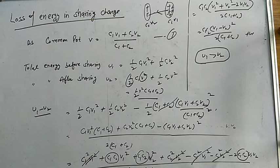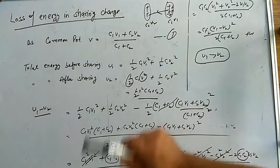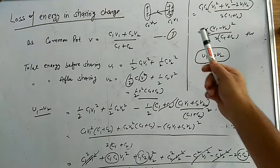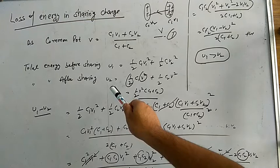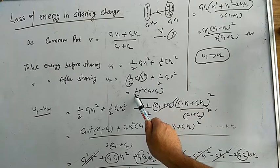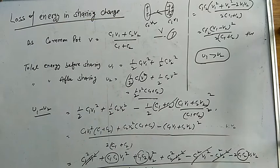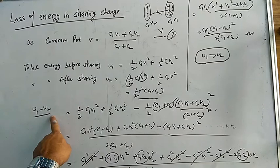The initial energy U1 = ½C1V1² + ½C2V2² (sum of both capacitor energies before sharing). After sharing, both have common potential V, so final energy U2 = ½(C1+C2)V². The energy loss = U1 - U2. If there is no loss this will be zero; if there is a loss, it will be positive since U1 > U2.